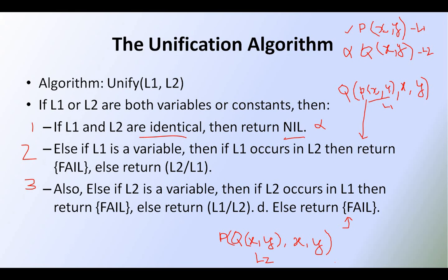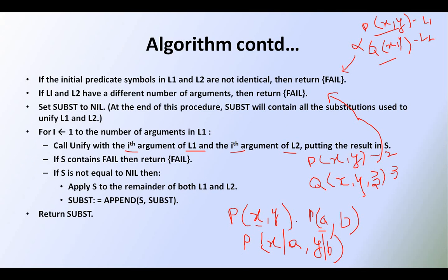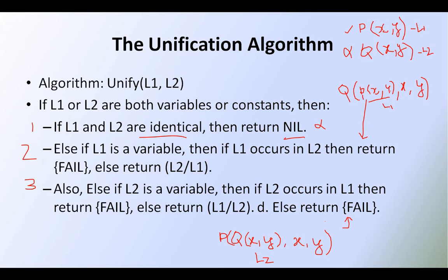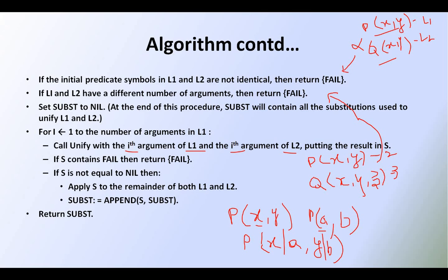In either case — if L1 occurs in L2, or L2 occurs in L1, or wrong number of arguments, or initial predicate symbols are not identical — we cannot unify. When we can unify: both literal names are the same, like P of X comma Y and P of A comma B, then we unify the ith element of one literal with the ith element of the other, giving X by A and Y by B.